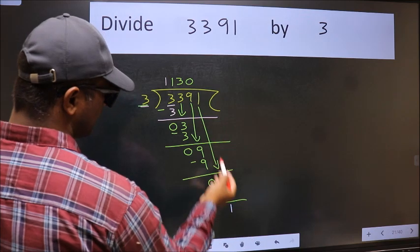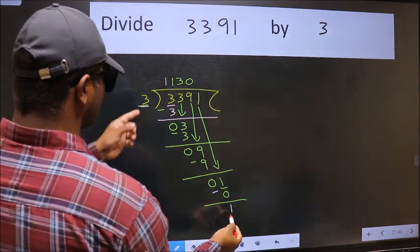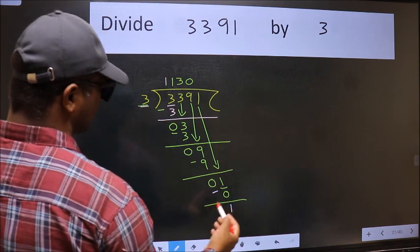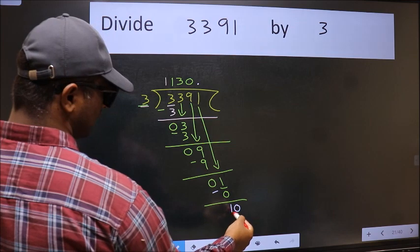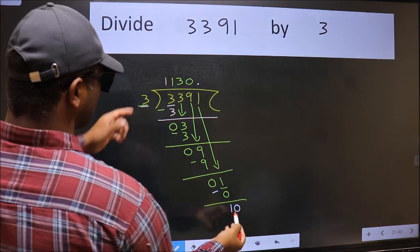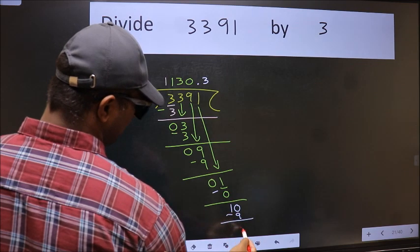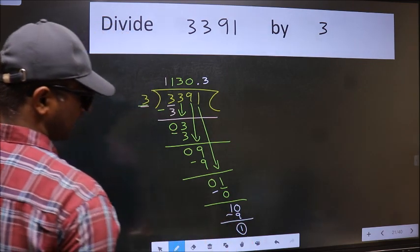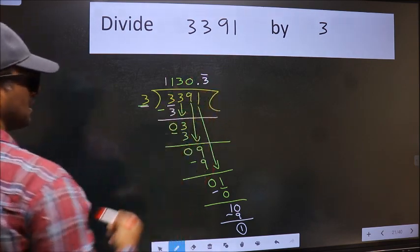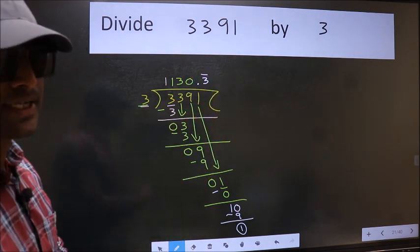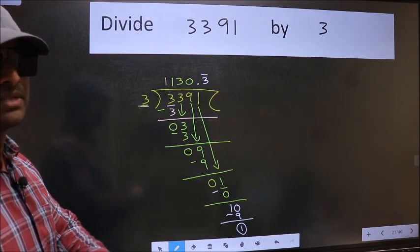Over here, we did not bring any number down. And 1 is smaller than 3. So now we can put dot and take 0. So 10. A number close to 10 in 3 table is 3 threes 9. Now we should subtract. We got 1 again. That means we get bar on this number. Did you understand where the mistake happens? You should not do that mistake.